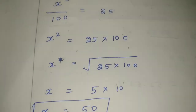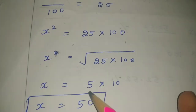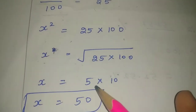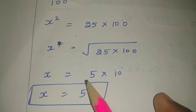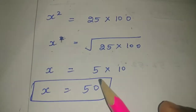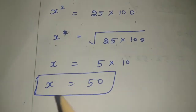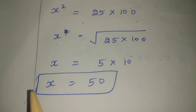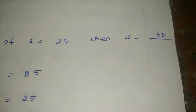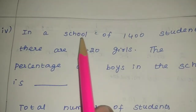Square root of 25 is 5, because 5 into 5 equals 25. Square root of 100 is 10, because 10 into 10 equals 100. So x is equal to 5 into 10, which is 50. Therefore, the x value is 50. Clear.